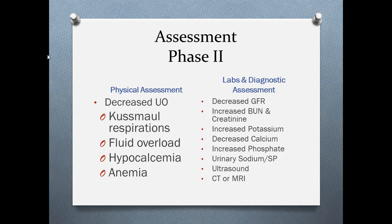Anemia is also present in phase two. The reason patients with kidney injury have anemia is that your kidney produces erythropoietin. When the kidney is failing, it will not produce enough erythropoietin to stimulate red blood cell production. Diagnostically, we're going to have a decrease in glomerular filtration rate. GFR: normal is greater than 60; less than 15 identifies that the patient needs dialysis.